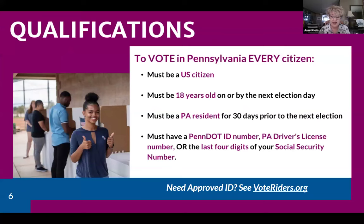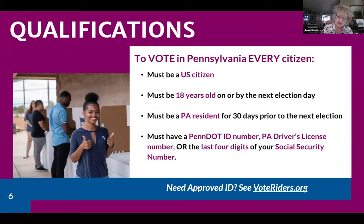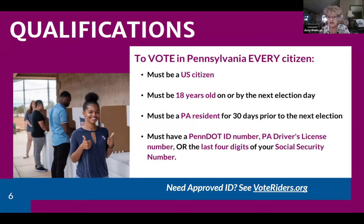To register to vote in Pennsylvania, a citizen must be a U.S. citizen, be at least 18 years old on or by the next election day, and be a PA resident for 30 days prior to the next election. For ID, you need a PennDOT ID or PA driver's license, or the last four digits of a Social Security number. There's a space on the printed application for those without a PA driver's license or Social Security number. Pennsylvania also allows registration of 17-year-olds who will be 18 on or before the next election day.